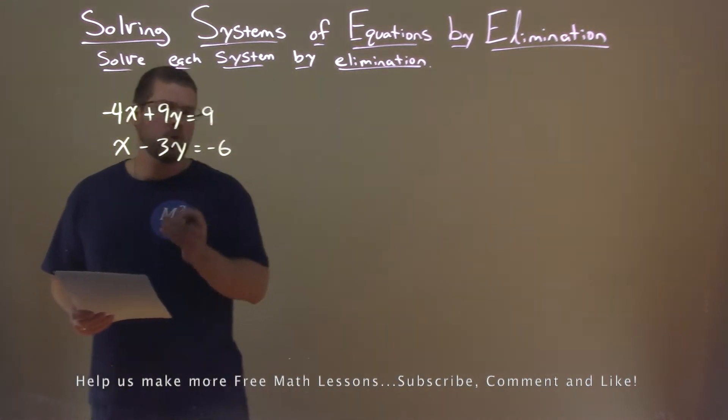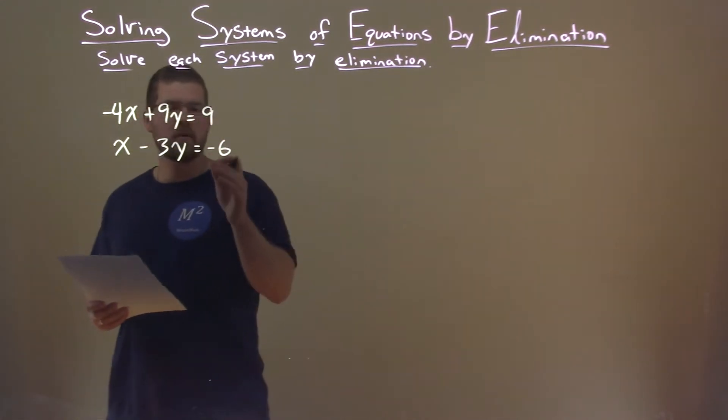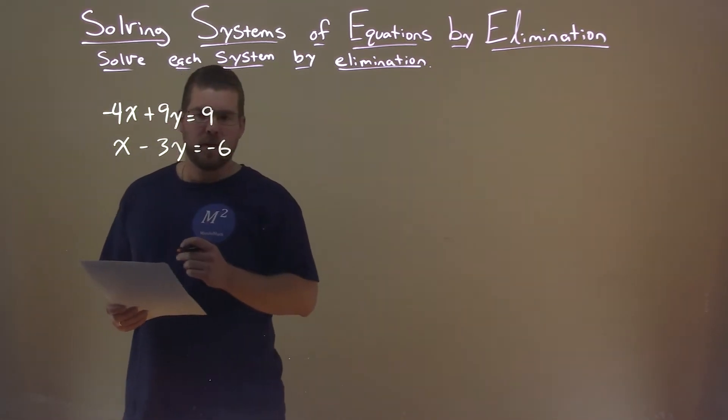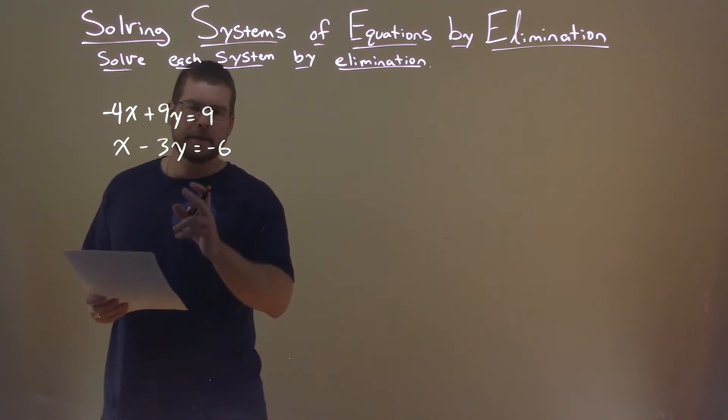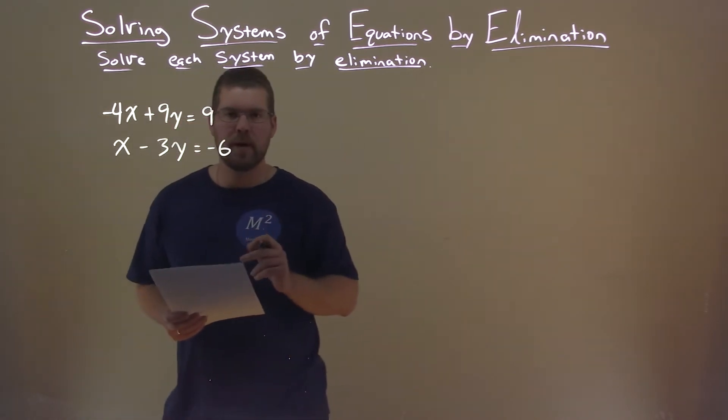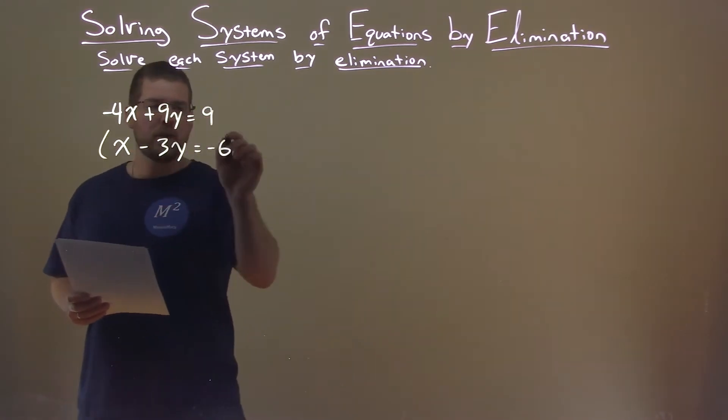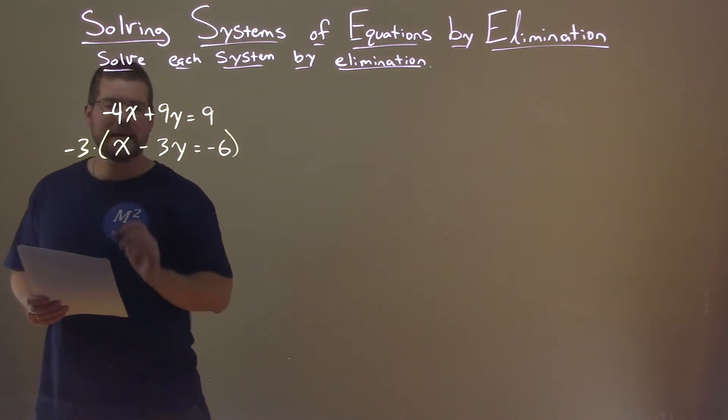So my goal here is to take one of these equations and multiply it by a factor or some number to see if we can eliminate a variable. My goal is y here. I have 9y and minus 3y. 3 can get into 9 pretty easily.